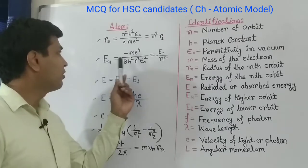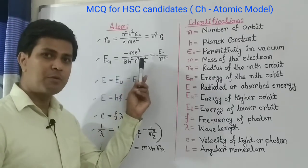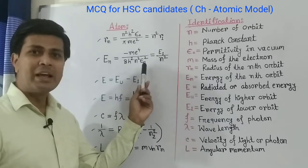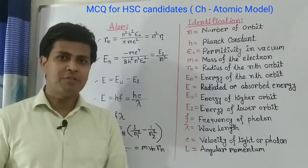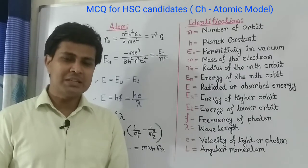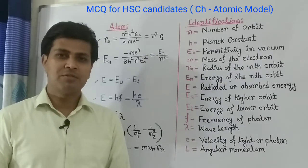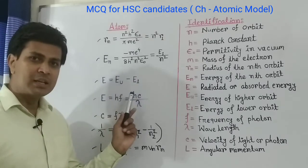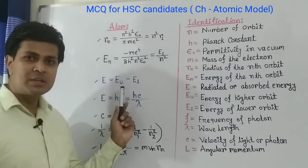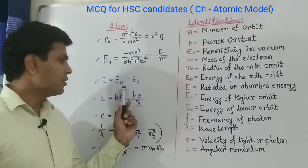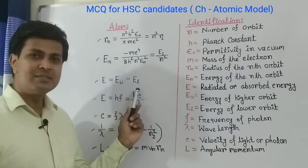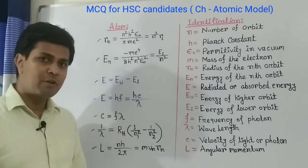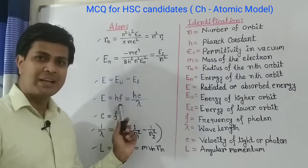The second formula is to calculate the energy of the nth orbit. The formula is En equals to minus m e to the power 4 divided by 8 n squared h squared epsilon naught squared. The third formula to calculate the radiated energy or absorbed energy is E equals to E_u minus E_l, where E_u is the energy of the upper orbit and E_l is the energy of the lower orbit.